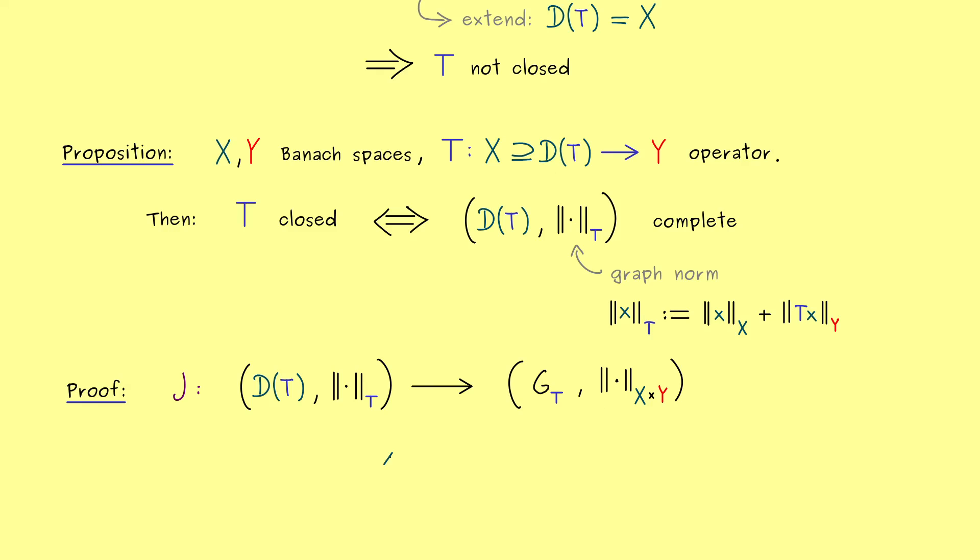And now we just send a point x to the graph of T. So what comes out here is simply a pair where the first component is x and the second component is Tx.